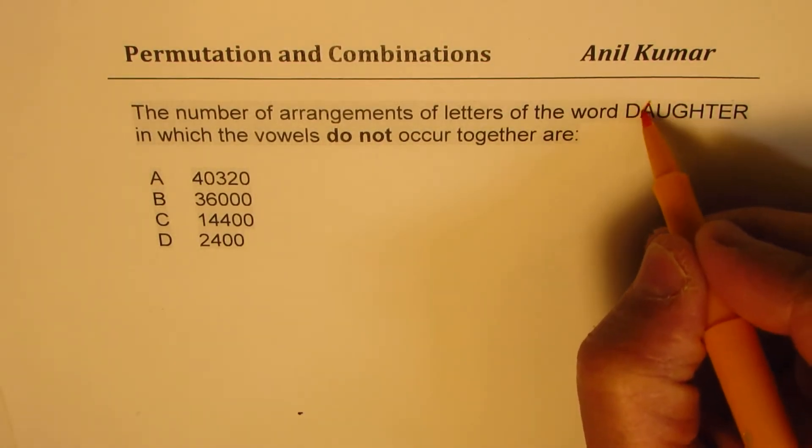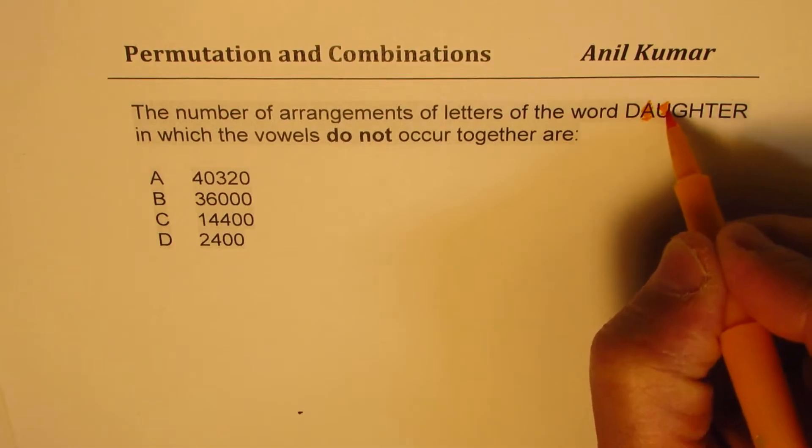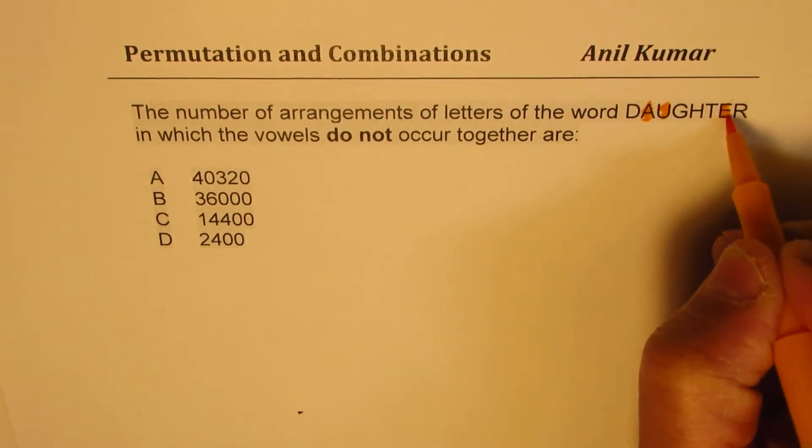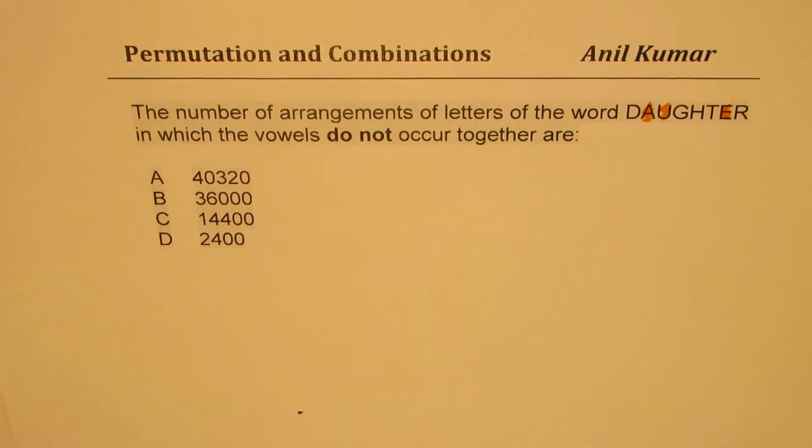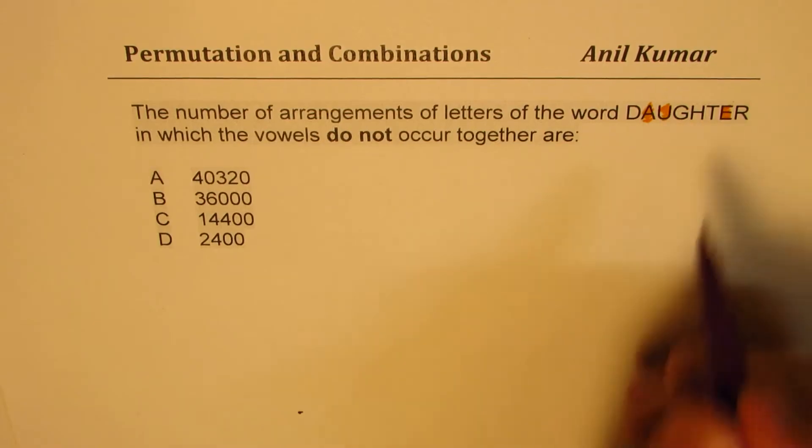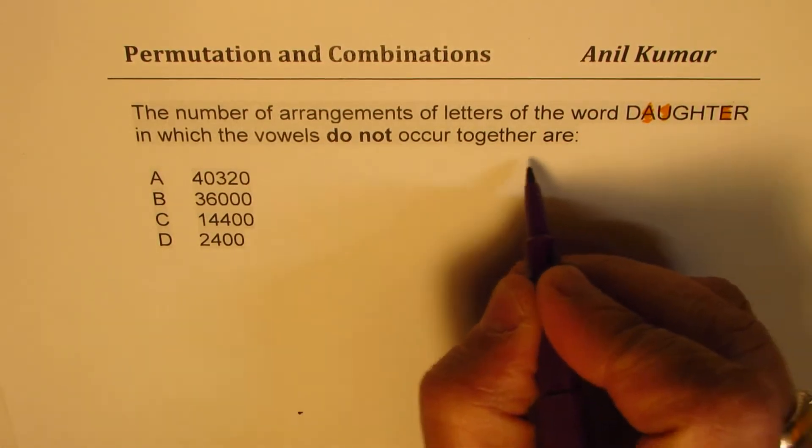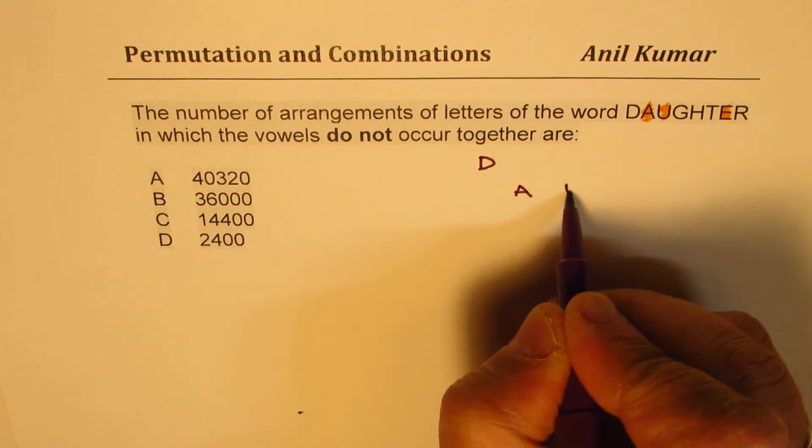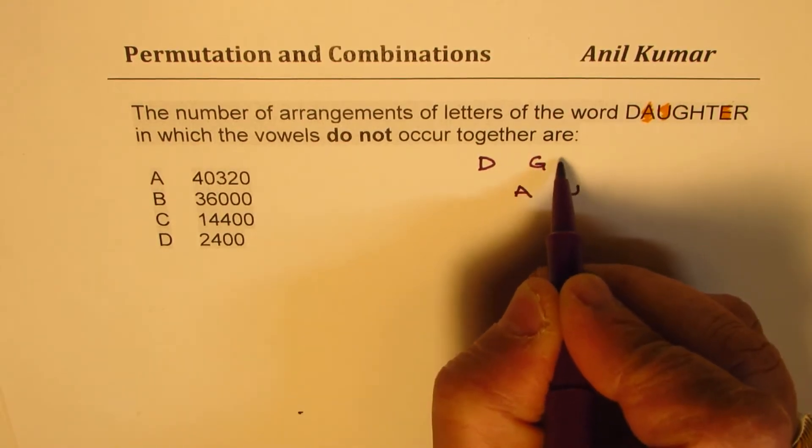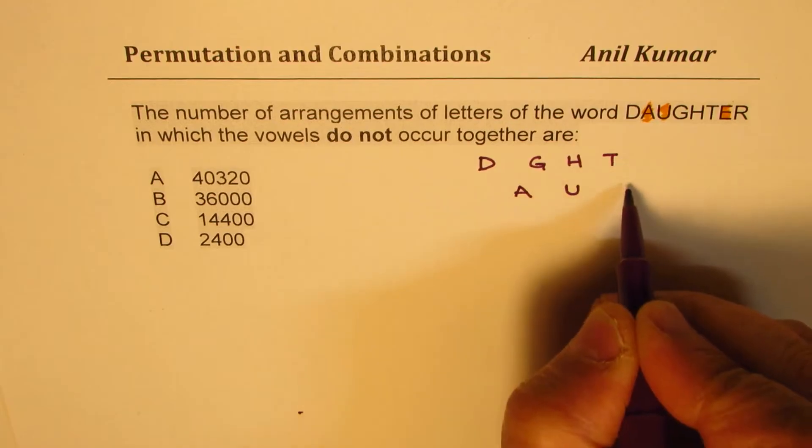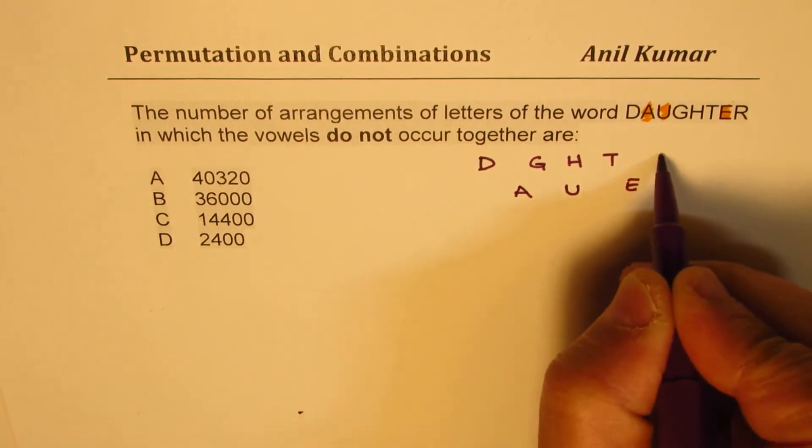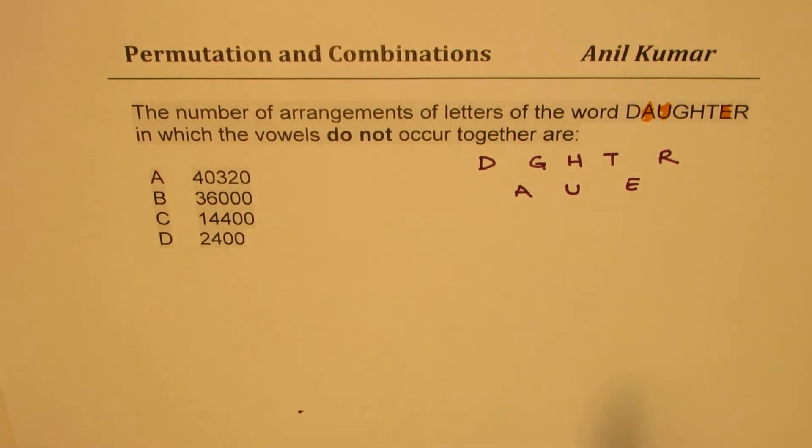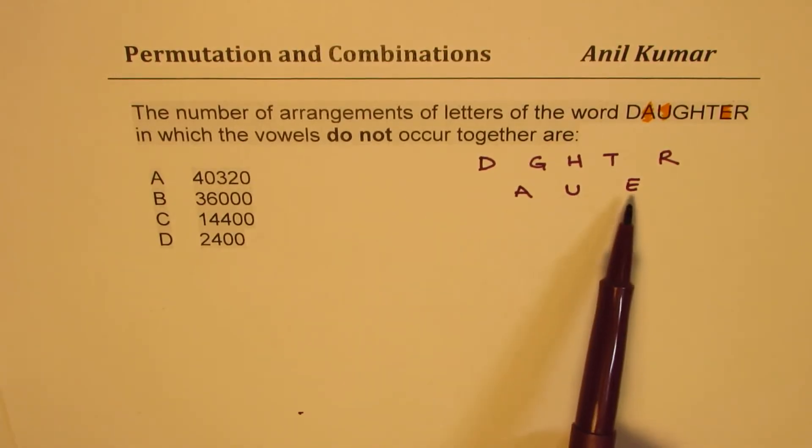Now let's look into this. We know the vowels are A, U, and E. So this word has three letters which are vowels. We could write this as D—A is a vowel—U is a vowel, then we have G, H, T, E is a vowel, and R. The question is that these vowels A, U, E should not be together. That is the question.